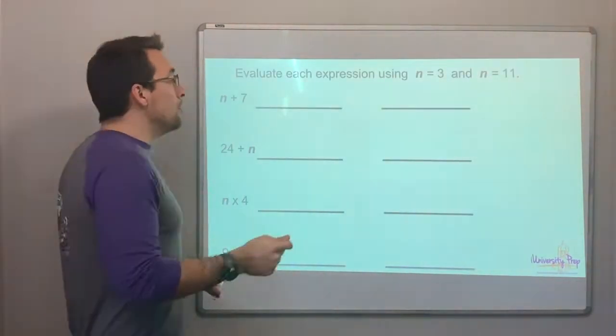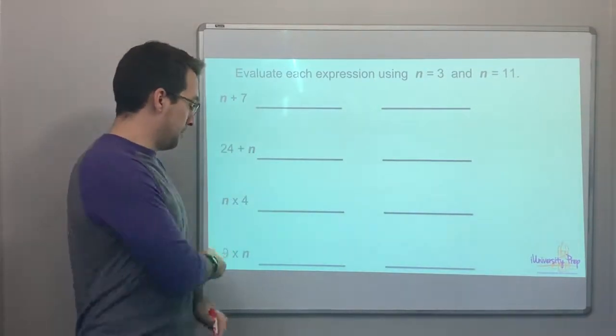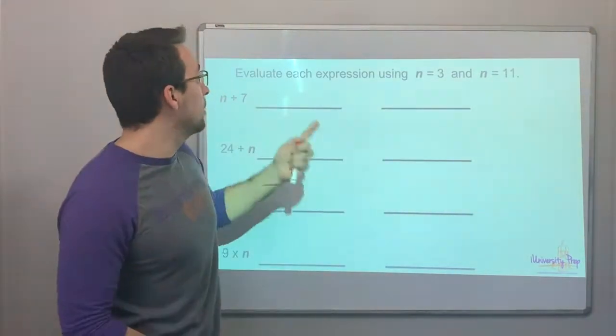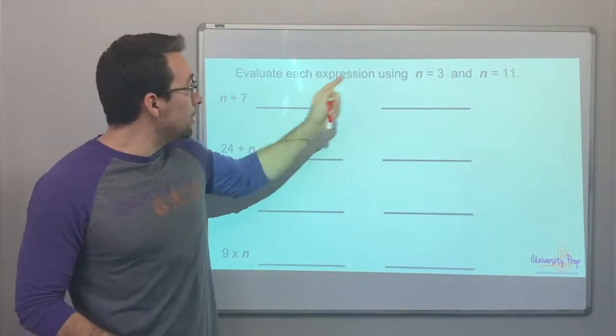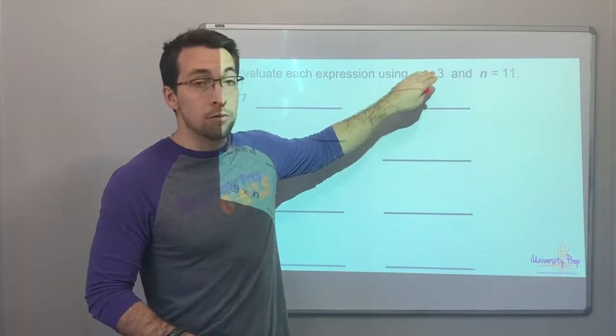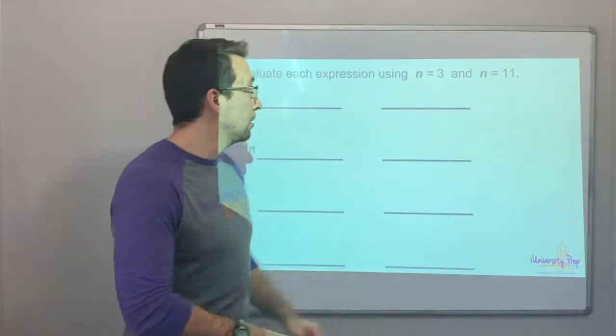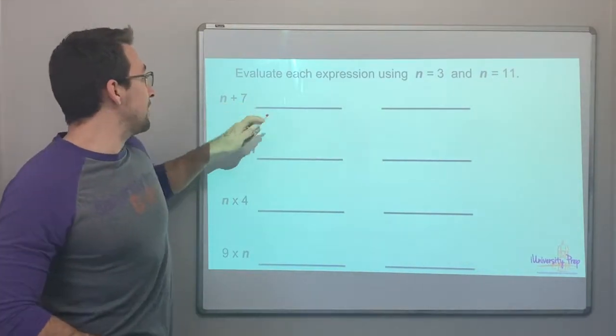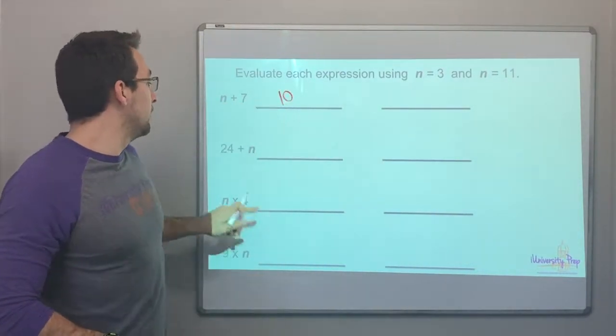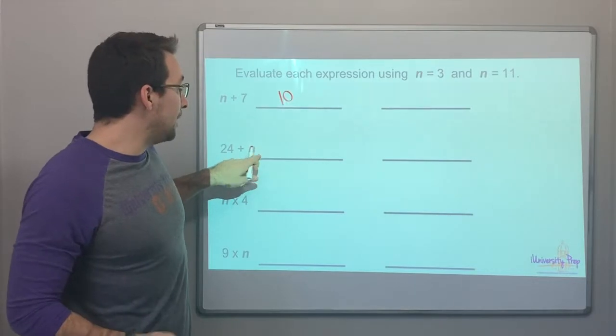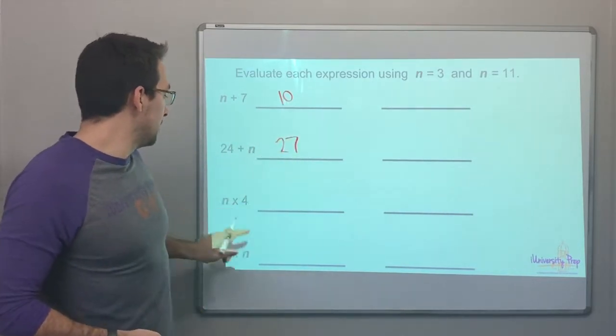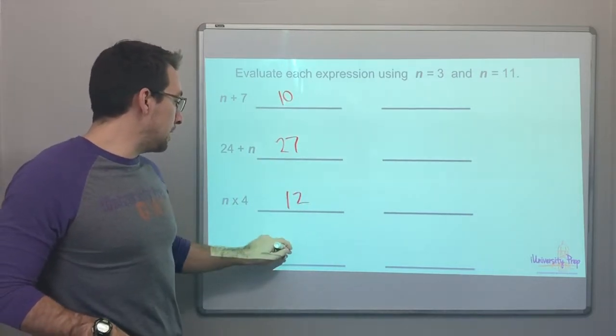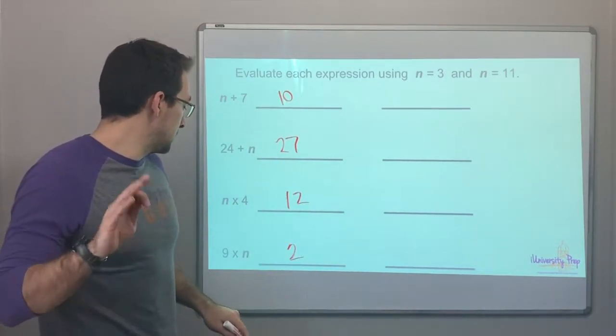We know that n is a variable, and for any variable we can substitute in a value. So here it's asking us to evaluate the expressions using n equals 3 and n equals 11. So this column will just do n equals 3. 3 plus 7 is 10. 24 plus 3 is 27. 3 times 4 is 12. 9 times 3 is 27.